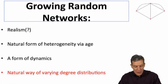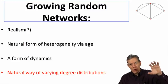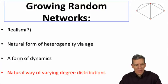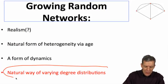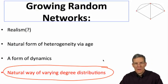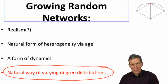So what we've got now is we've talked about these growing distributions. Let's get into them in a little more detail. This gives a natural form of heterogeneity via age, and we saw that in the other distribution. Older nodes are going to have more links. It gives us a form of dynamics. In particular, this is going to give us a natural way of varying degree distributions by making different assumptions about the way that new nodes form their degrees. Depending on how they form those, we can end up with different degree distributions.